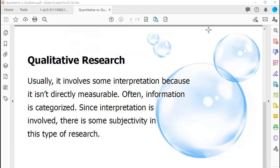Qualitative research involves some interpretation because the information isn't directly measurable. Often, information is categorized. There are practices to quantify qualitative research in order to provide a number, such as coding open-ended survey questions to find the themes that the data suggest. Since interpretation is involved, there is some subjectivity in this type of research.